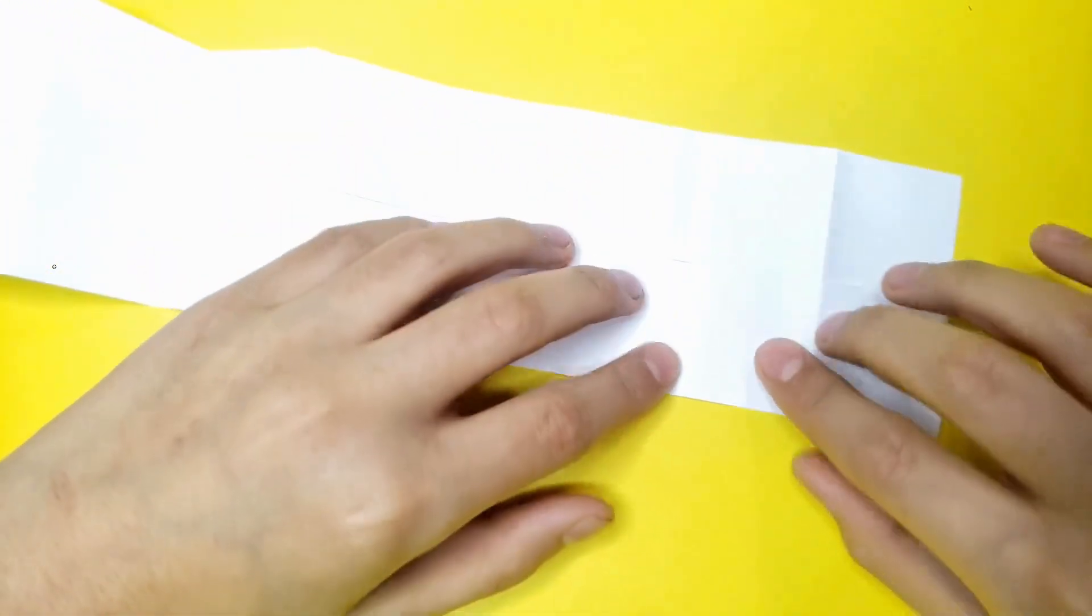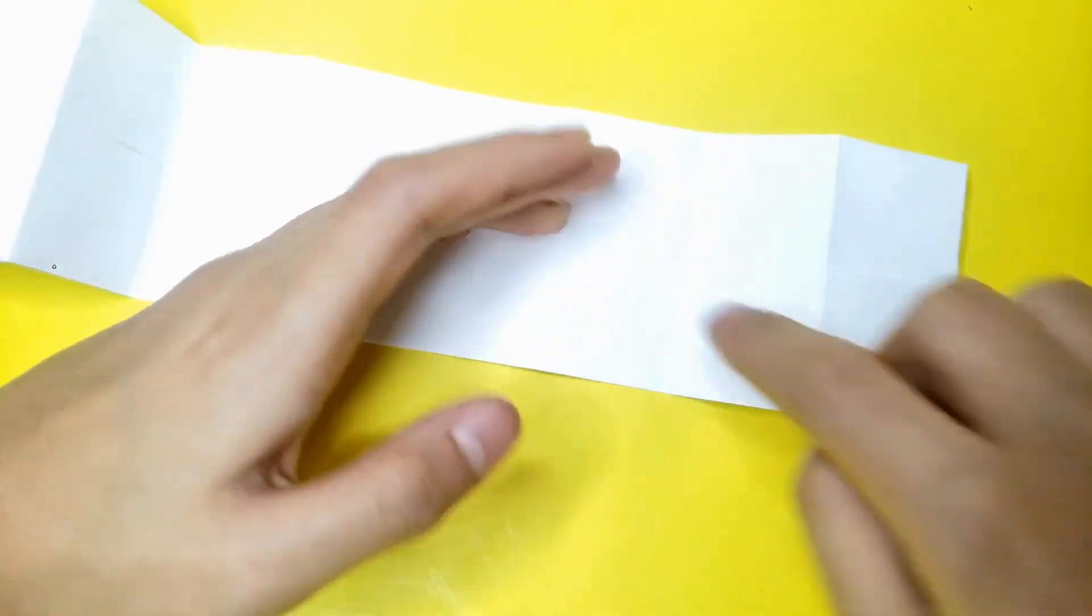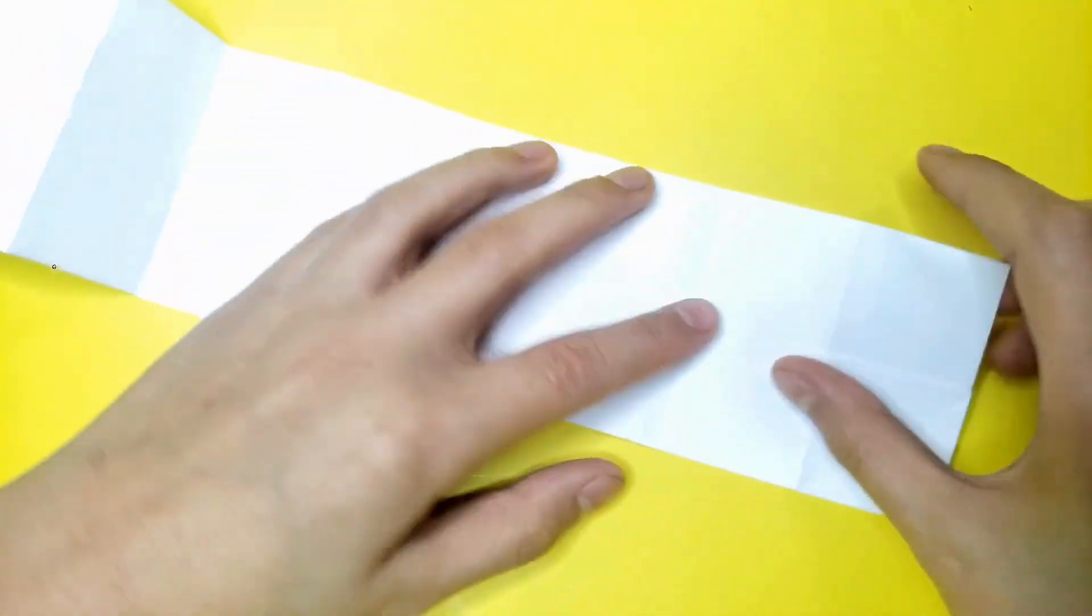And now you're going to make every two boxes, X's. Like every two boxes.